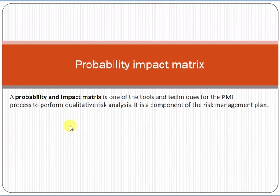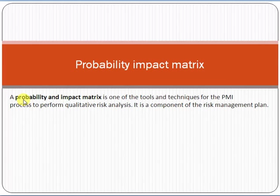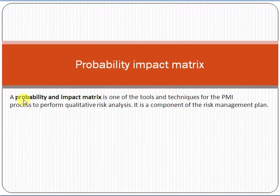We analyze each risk based on its probability and impact. Probability means the likelihood or chances of occurrence — what is the possibility that this issue will occur. Impact means what effect it will have on the project if it occurs — for example, a $1,000 cost loss or a 20-day delay in the project. By examining these two factors — probability and impact — we prioritize the risks, which is called qualitative risk analysis.